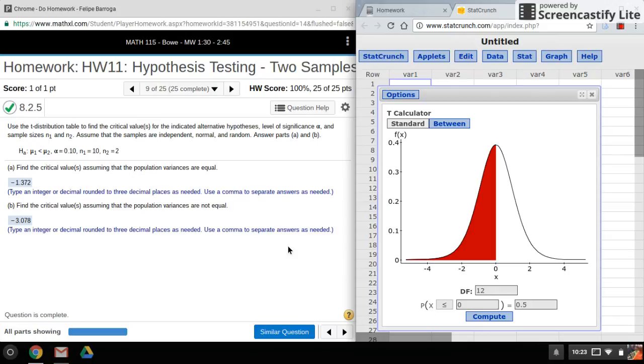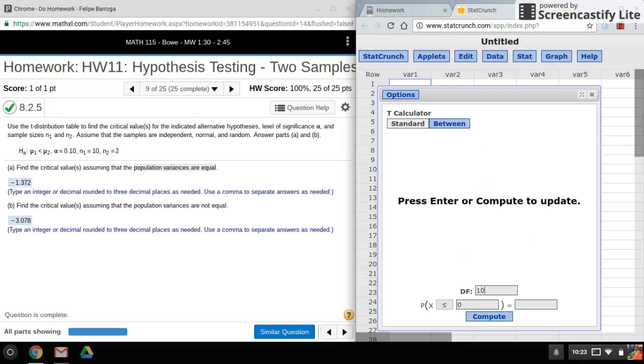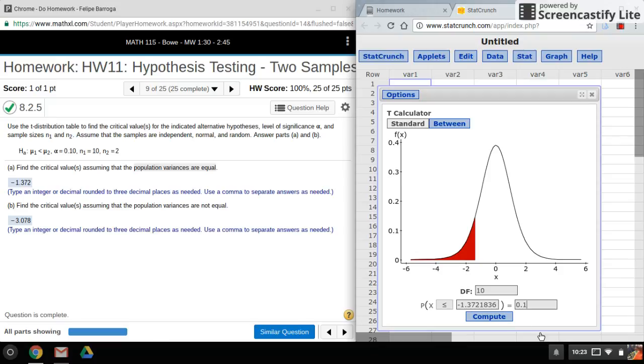If the population variances are equal, I'll add my two sample sizes and subtract two. That'll give me for this problem 10 degrees of freedom. And because it's only a one-tail test, I can use alpha. So I'll put in alpha and hit compute, and there's my critical value.